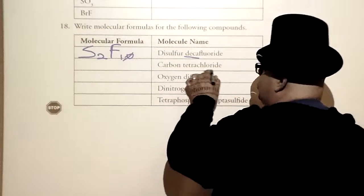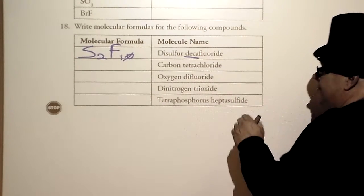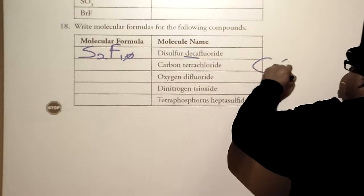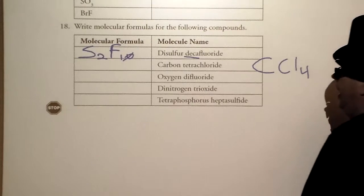Now, we have carbon tetrachloride. We have one carbon. Again, they're both non-metals. So I got CCl4. That's carbon tetrachloride.